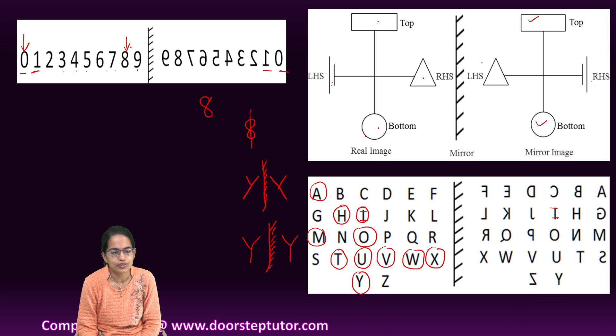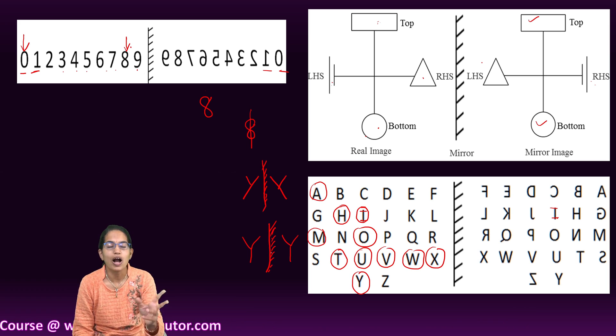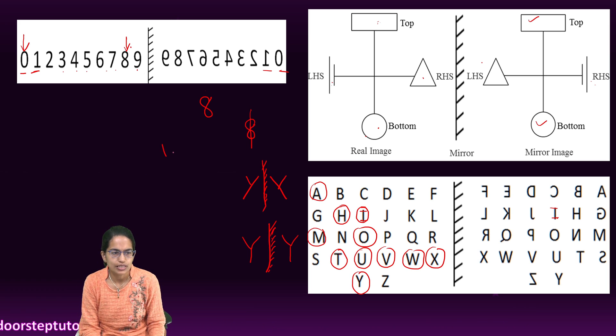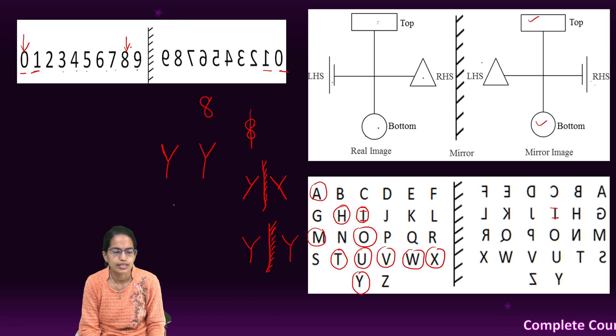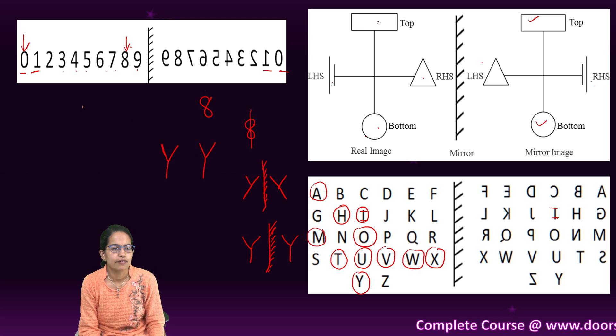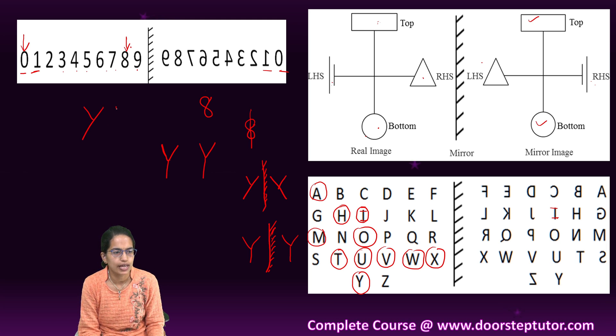What if I have this Y? It would become this Y. So the shape in which I am drawing the letter makes a material difference. If it is symmetrical, if there are two lines, a V and a line here, it would remain a V and a line here. But if it is small line and a bigger line, it would become bigger line and a small line, and that's how the difference would be seen in the case of mirror image.